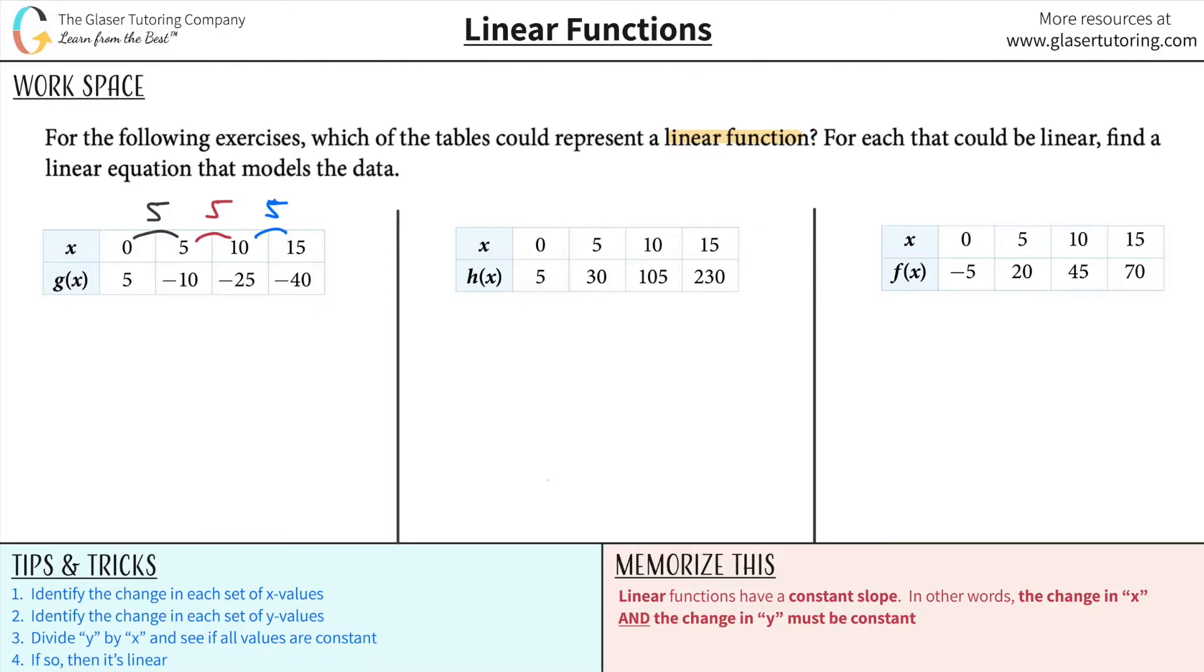So, how about now we do the same thing for y? Okay, now you might say, well where's y? Well, remember g of x, right? Just scribble that out, call it y, okay? Same thing. So, from 5 to negative 10, what's the difference between those two? Well, it simply would be negative 15, right? We can call it negative 15,